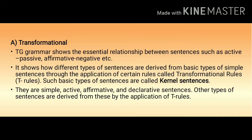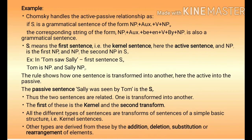TG grammar shows how different types of sentences are derived from basic types of simple sentences through the application of certain rules called transformational rules, or T-rules. Such basic types of sentences are called kernel sentences — K-E-R-N-E-L — kernel sentences. They are simple, active, affirmative, and declarative sentences. Other types of sentences are derived from these by the application of T-rules.